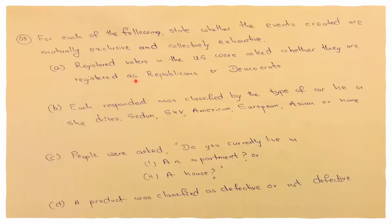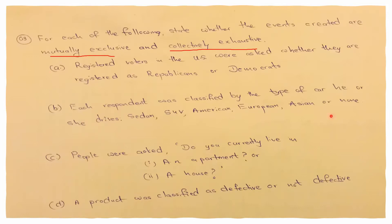Question 3 asks: for each of the following, state whether the events are mutually exclusive and collectively exhaustive. Part A: registered voters asked whether they are Republican or Democrat. Part B: respondents classified by car type — sedan, SUV, American, European, Asian, or none. Part C: people asked if they live in an apartment or a house. Part D: a product classified as defective or not defective.